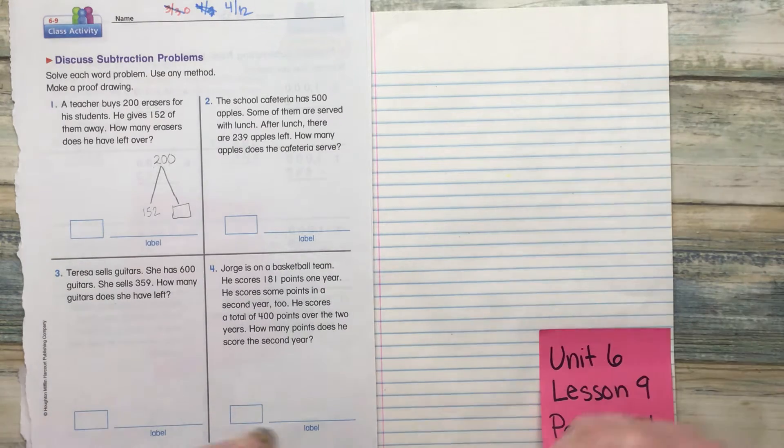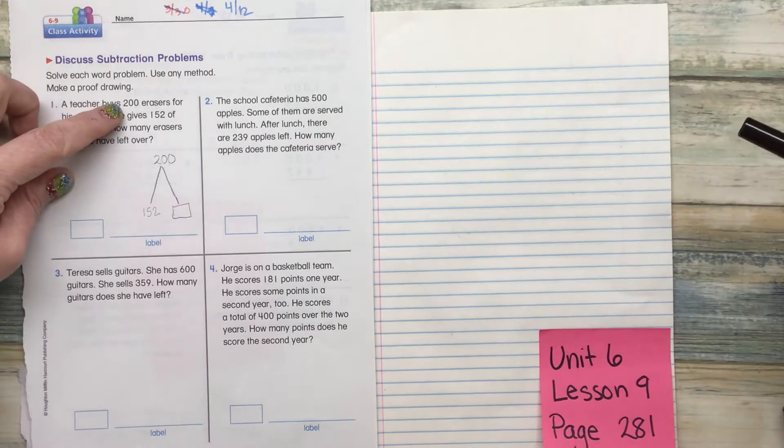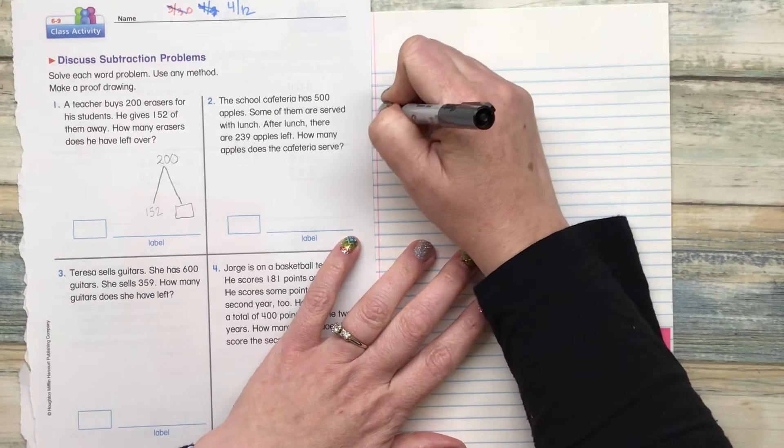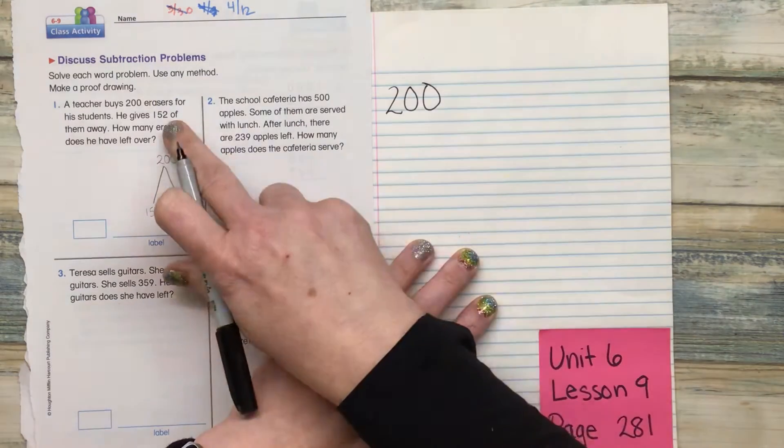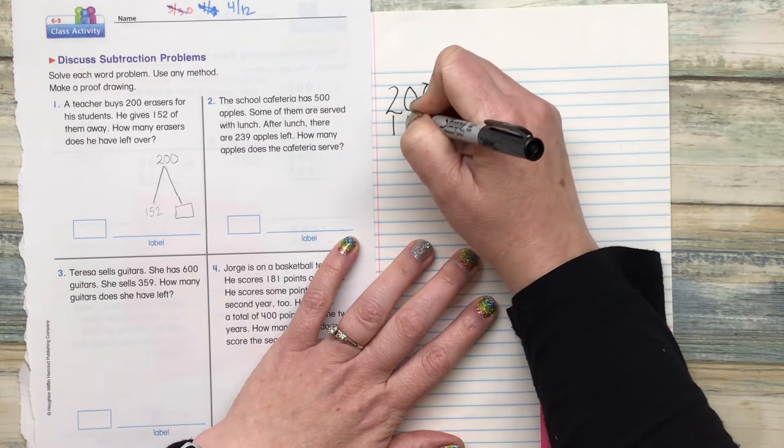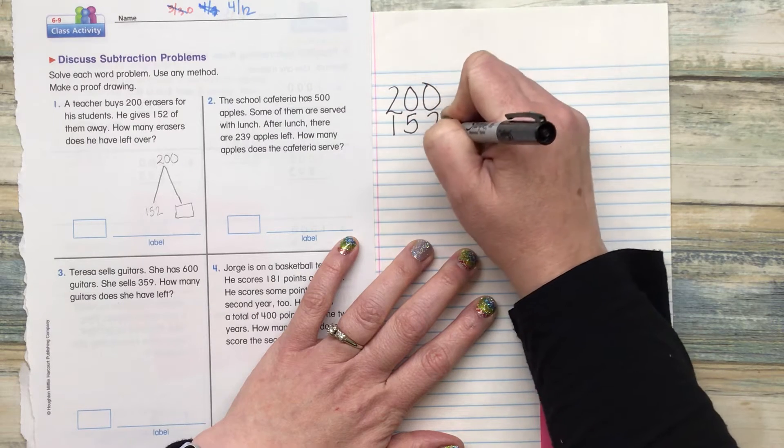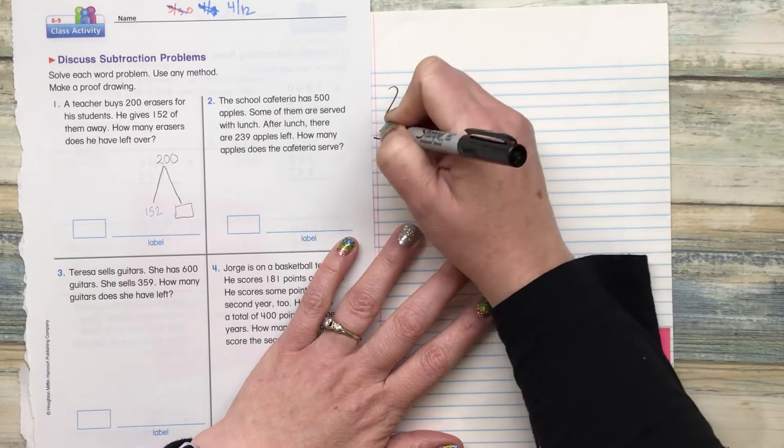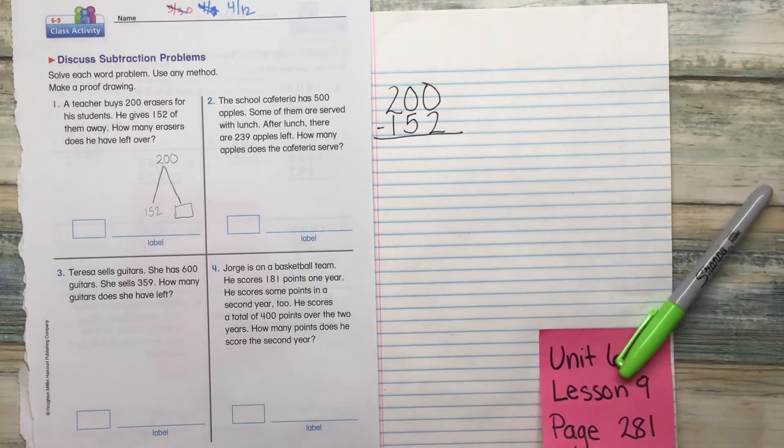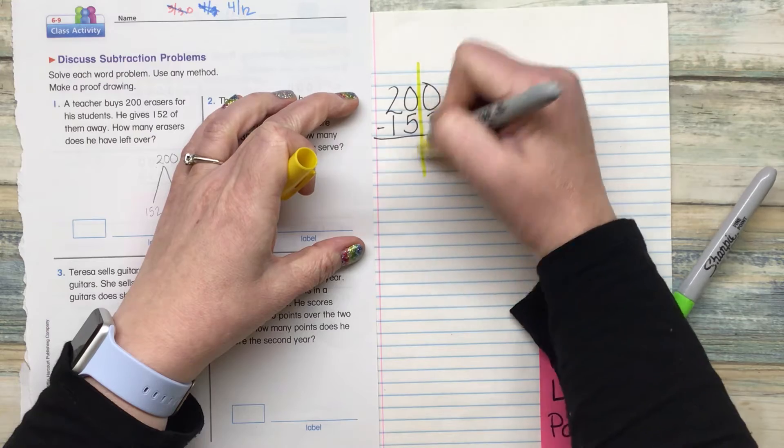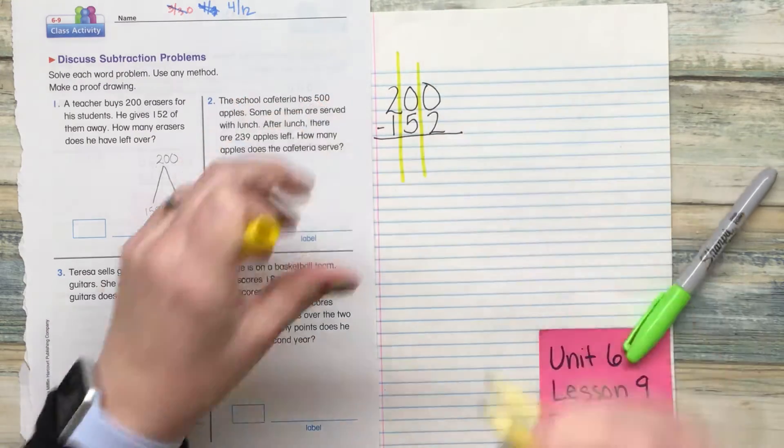So since we know that this is a subtraction equation, we know that this larger number is going to go on top. So that's 200, and then the smaller number goes on the bottom, 152. Put our line under there and a minus. One of the things that I like to do when we are working with subtractions, especially I like to put a line down the middle of each one to show the different columns.